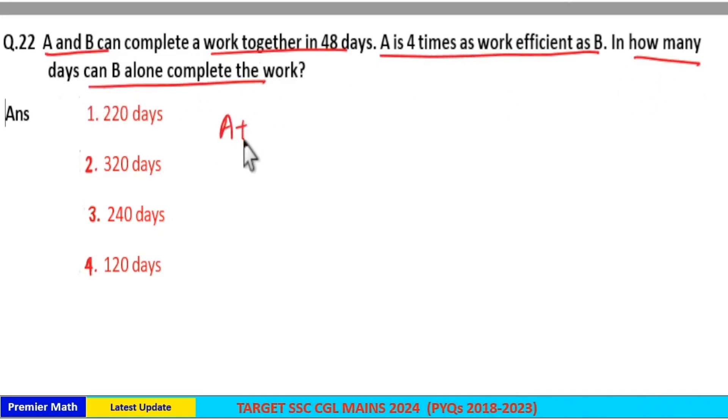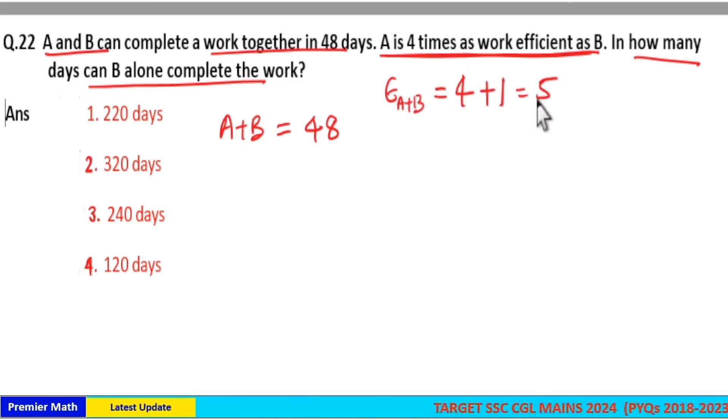Here A and B together complete the work in 48 days and A is 4 times as work efficient as B, means A's efficiency is 4 units then B's efficiency is 1 unit. So total efficiency of A and B is equal to 4 plus 1, 5 units, which means in one day A and B together complete 5 units of work.